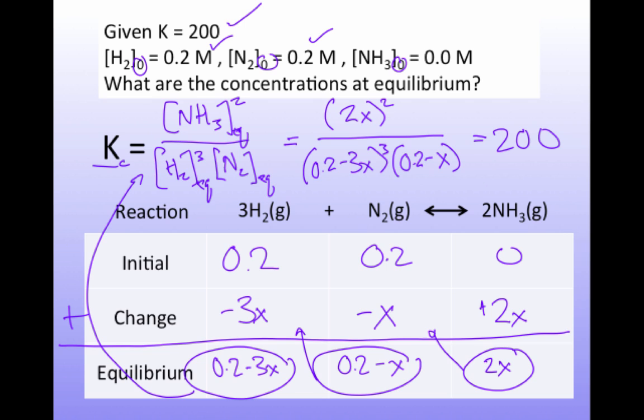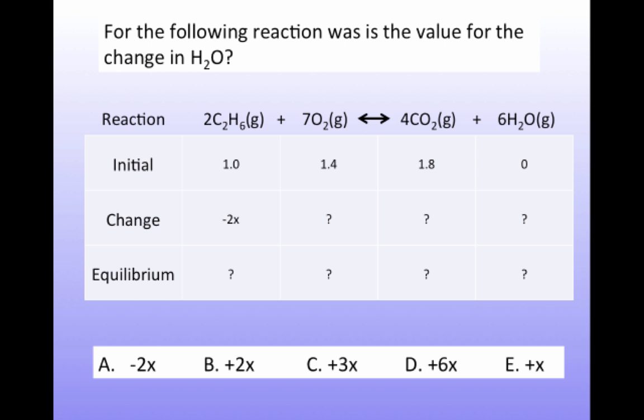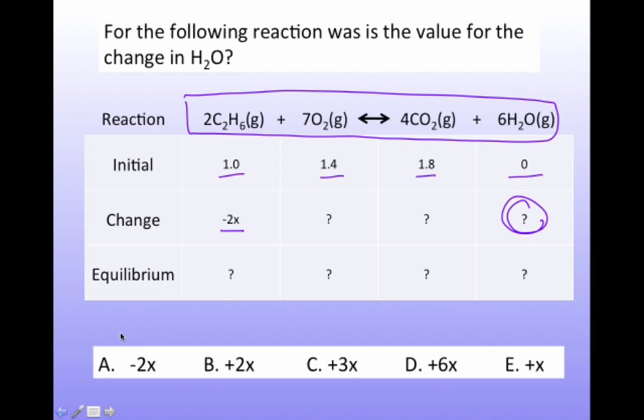So let's look at a quick question. For the following reaction, what's the value for the change in H₂O? So I've given you some initial amounts. And again, here we have a new reaction. I've got this balanced equation. And I want to know what's the change in H₂O. So that's this one here. Based on the fact that I'm losing, or I have a change of minus 2x of my ethane, C₂H₆.